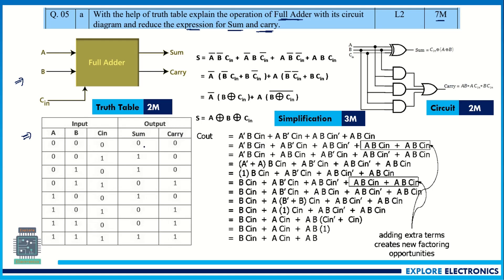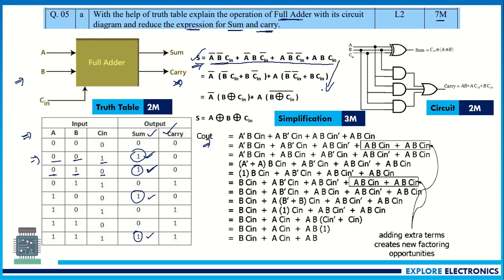You need to write the truth table correctly. Then, by looking at the sum column, you write the expression — wherever there is a 1, you consider that row. Looking at the input combinations, we take A̅B̅C, then A̅B̅C and the next ones likewise, getting four expressions that we sum together. After writing this, we simplify using Boolean laws — that is what reducing the expression means. Finally, the sum expression comes out as A XOR B XOR C_in.